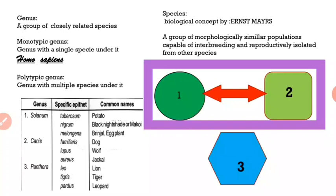A polytypic genus is one which has multiple species under it. For example, the genus Solanum has three species: tuberosum, nigrum, and melangina. The genus Canis has three species: familiaris, lupus, and aureus. Genus Panthera also has multiple species — Panthera leo representing lion, tigris belonging to the tiger species, and pardus belonging to the leopard species.